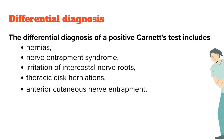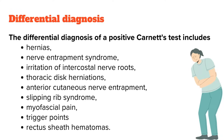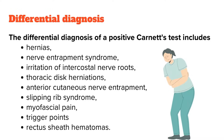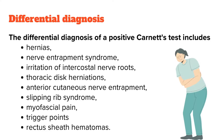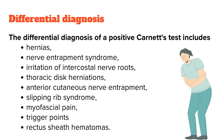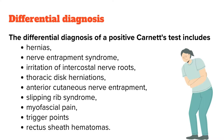Differential diagnosis: The differential diagnosis of a positive Carnett's test includes hernias, nerve entrapment syndrome, irritation of intercostal nerve roots, thoracic disc herniations, anterior cutaneous nerve entrapment, slipping rib syndrome, myofascial pain, trigger points, and rectus sheath hematomas.